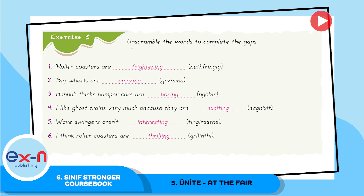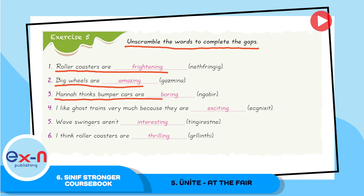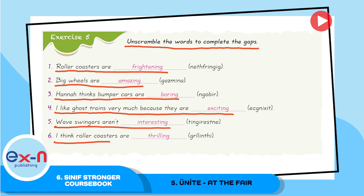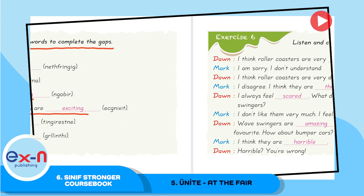Exercise 5: Unscramble the words to complete the gaps. Rollercoasters are frightening. Big wheels are amazing. Hana thinks bumper cars are boring. I like ghost trains very much because they are exciting. Wave swingers aren't interesting. I think rollercoasters are thrilling.